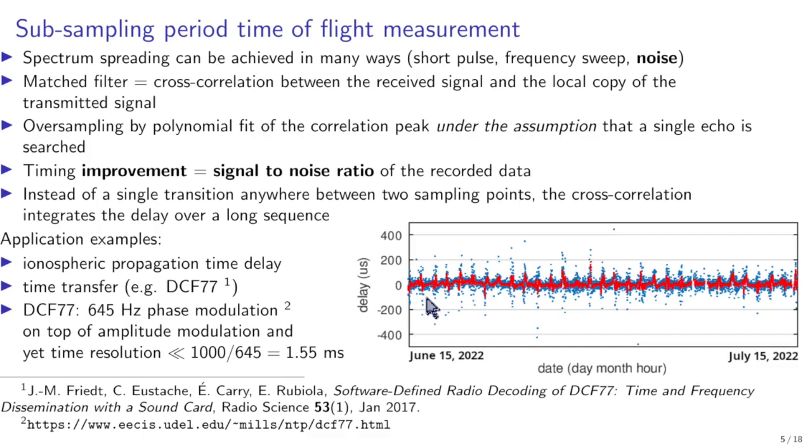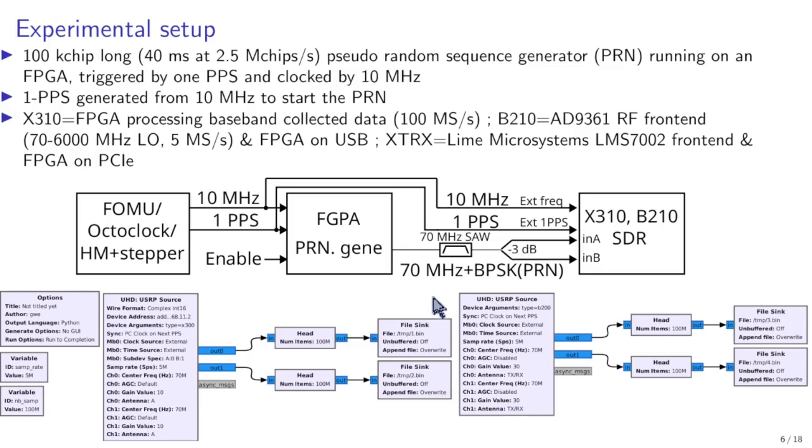So that will tell us how we can do measurement at much finer granularity than the sampling period. So what we're interested in is qualifying the coherence of dual channel SDR receiver whether the X310 which is a baseband receiver with the A2D converter directly connected to the FPGA, a B210 at its research with its AD9361 front end from Analog Devices which is a very complex front end taking care of the transposition from radio frequency band to baseband front end with unknown latencies.